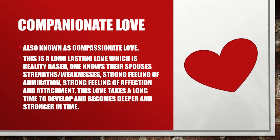Companionate love, also called compassionate love, is a long-lasting love which is reality-based. One knows their spouse's strengths and limitations. It involves a strong feeling of admiration, affection, and attachment. This love takes a long time to develop and becomes deeper and stronger over time.